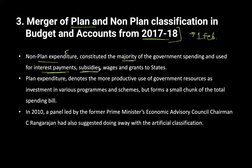Likewise, subsidies - if there is a scheme or a policy that is important from a welfare perspective, like fertilizer subsidy or the PDS scheme with food subsidy, you don't have any choice there either. Then wages have to be paid, grants to states have to be given. Because you don't have any option, that is why it used to be known as non-planned expenditure, but now we don't have this category.